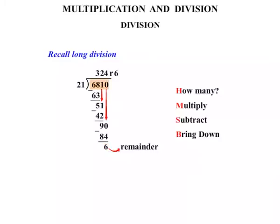So 6810 ends up being 21 times 324 with a remainder of 6. That's how we can write that. I've shown you that way because we're going to do a very similar thing using algebra — using polynomials.